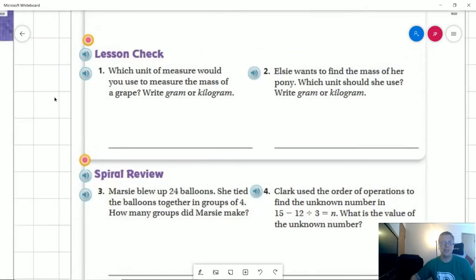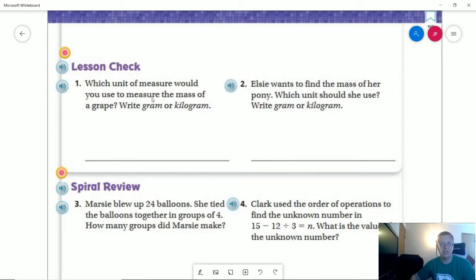Number one on the back. What unit of measurement would you use to measure the mass of a grape? So a grape being a little tiny round piece of fruit. So we're not talking about the entire bunch. We are talking about a singular grape. A bunch of grapes would probably be closer to kilograms, and then a single grape would be closer to one gram.